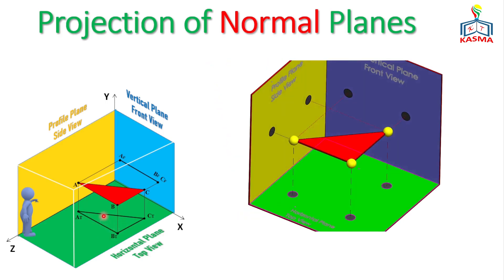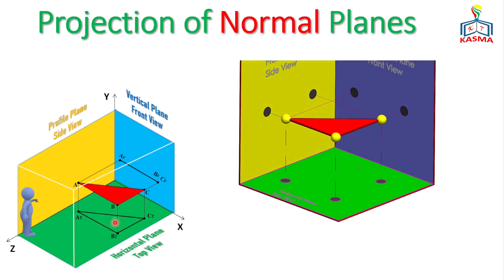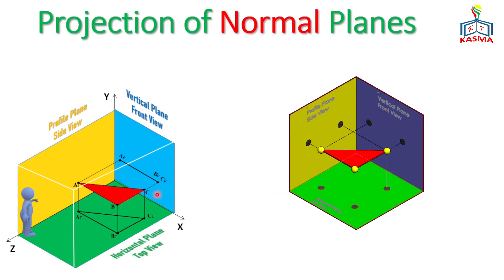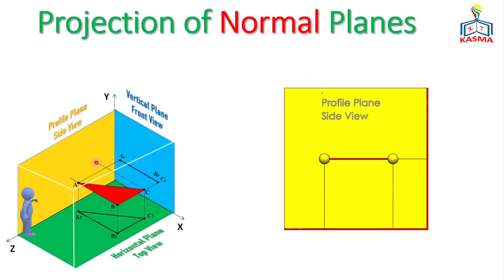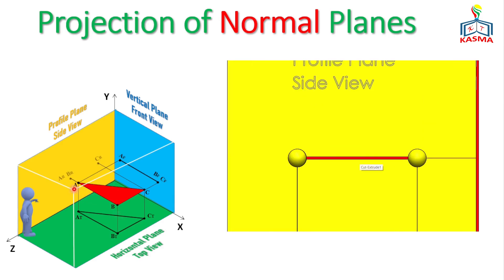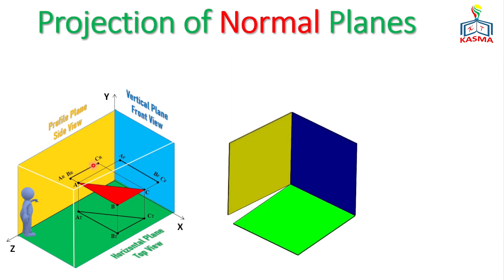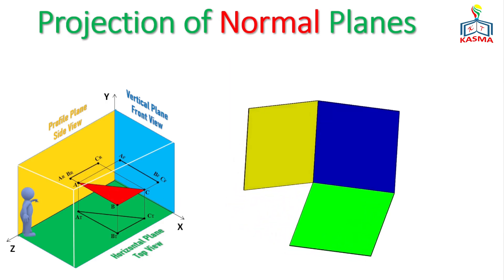When projecting onto the profile plane, the projection of A appears at one location and projections of B appear aligned with A. The projection of point C appears separately. Once we connect all three points, they form an edge in the side view. Now let's construct this on the multi-view drawing.